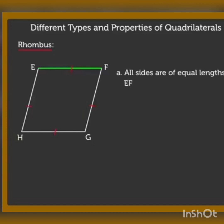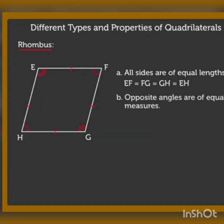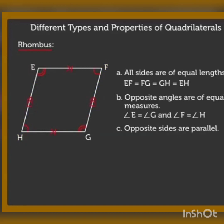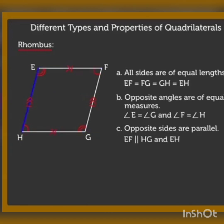Now comes rhombus, which is similar to a square. All sides are of equal lengths. Opposite sides are parallel to each other. Opposite angles are of equal measures, but not like a square where each angle measures 90 degrees. The sum of the four angles is 360 degrees as it is a quadrilateral, but the individual angles are not 90 degrees each. So in a rhombus: all sides are equal, opposite sides are parallel, and opposite angles are of equal measures.